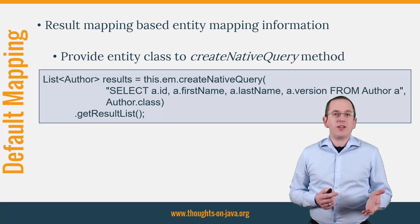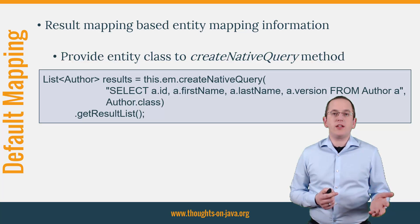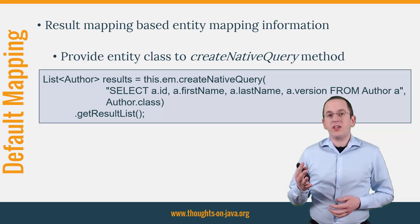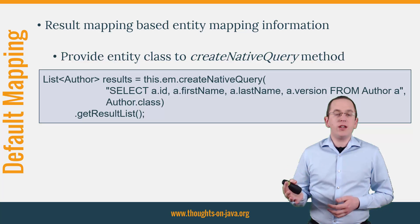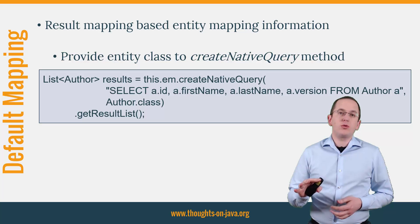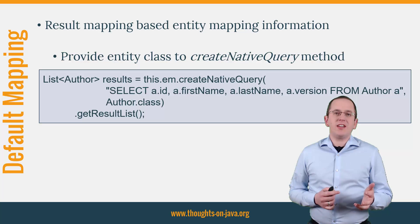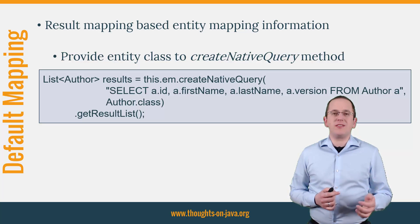If that is successful, the EntityManager will return a list of fully initialized author entities that are managed by the current persistence context. So the result is the same as if you had used a JPQL query, but you're not limited to the small feature set of JPQL. Let's jump into the IDE and give this a try before I show you how to define a custom mapping.